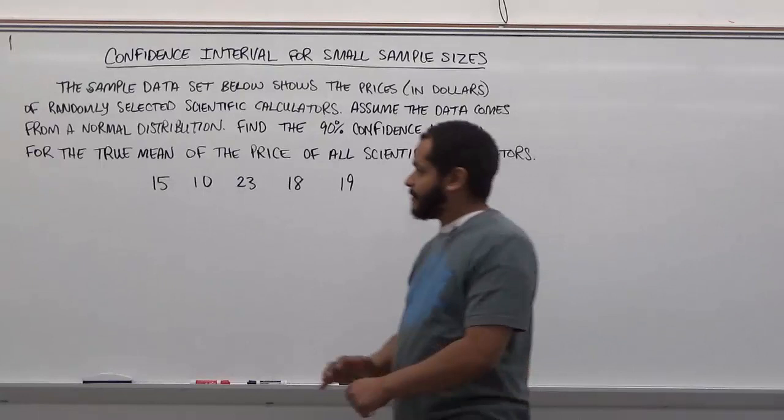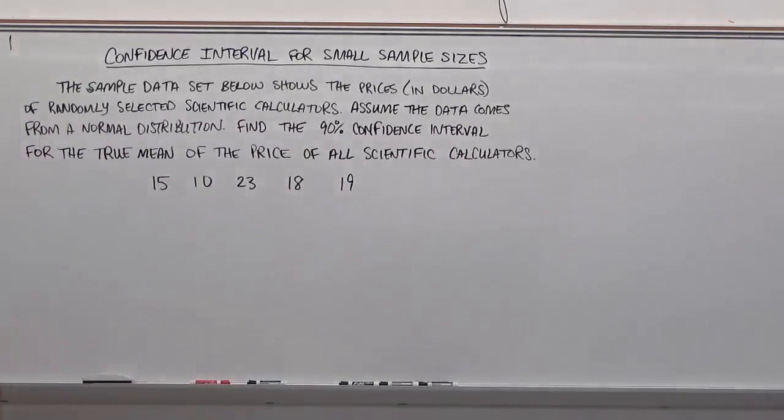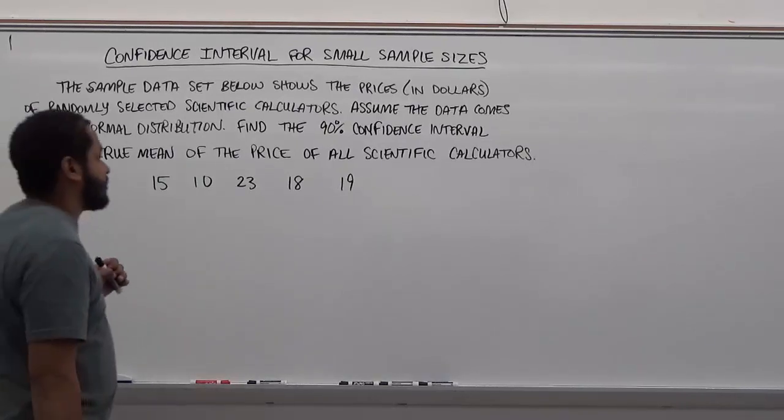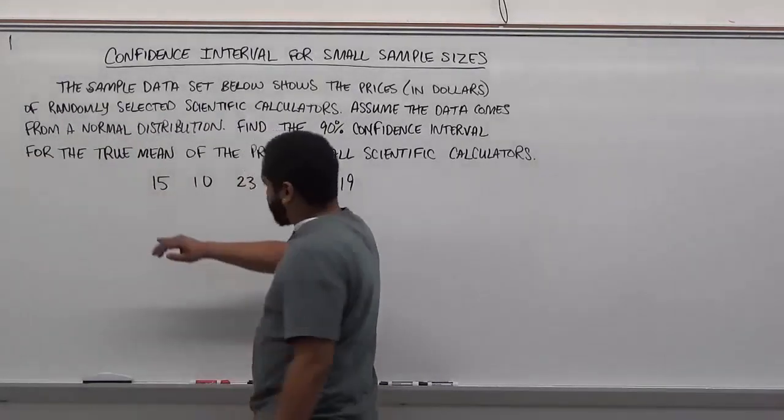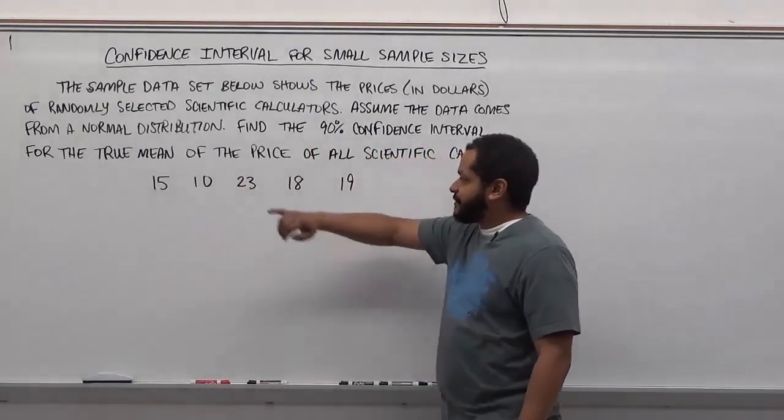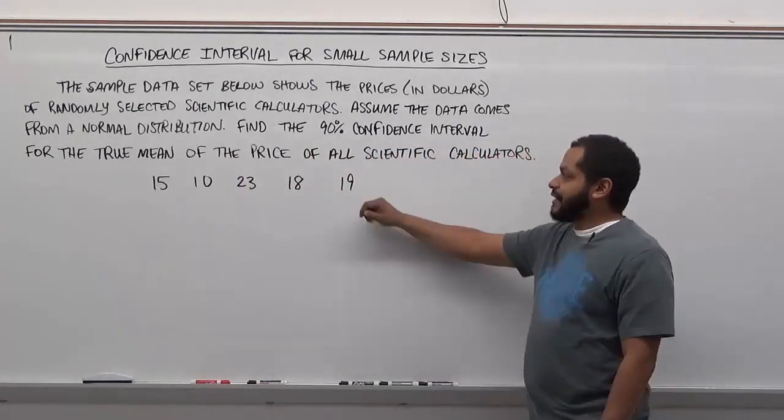We'll see from the question how this works out now. The sample data set below shows the prices in dollars of randomly selected scientific calculators. Assume the data comes from a normal distribution. Find the 90% confidence interval for the true mean of the price of all scientific calculators. Our samples are $15, $10, $23, $18, and $19.